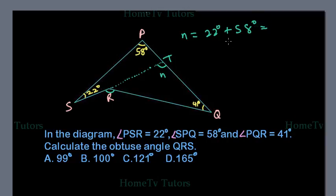Alright, so 22 plus 58 gives us 80 degrees. Okay, so N is 80 degrees.